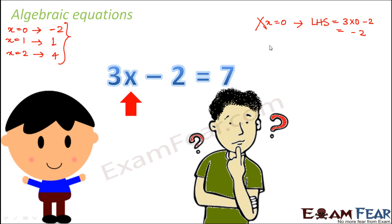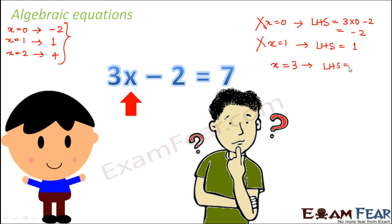That means x is equal to 0 is not possible here. What about x equal to 1? If you put x equal to 1, your left hand side will be equal to 1, but we want the left hand side to be equal to 7. So x equal to 1 is also not possible. But if you think of a value like x is equal to 3, then the left hand side becomes 3 into 3, that is 9 minus 2, that is 7. So in this case your left hand side is equal to your right hand side — this is what we wanted, so x equal to 3 is possible.